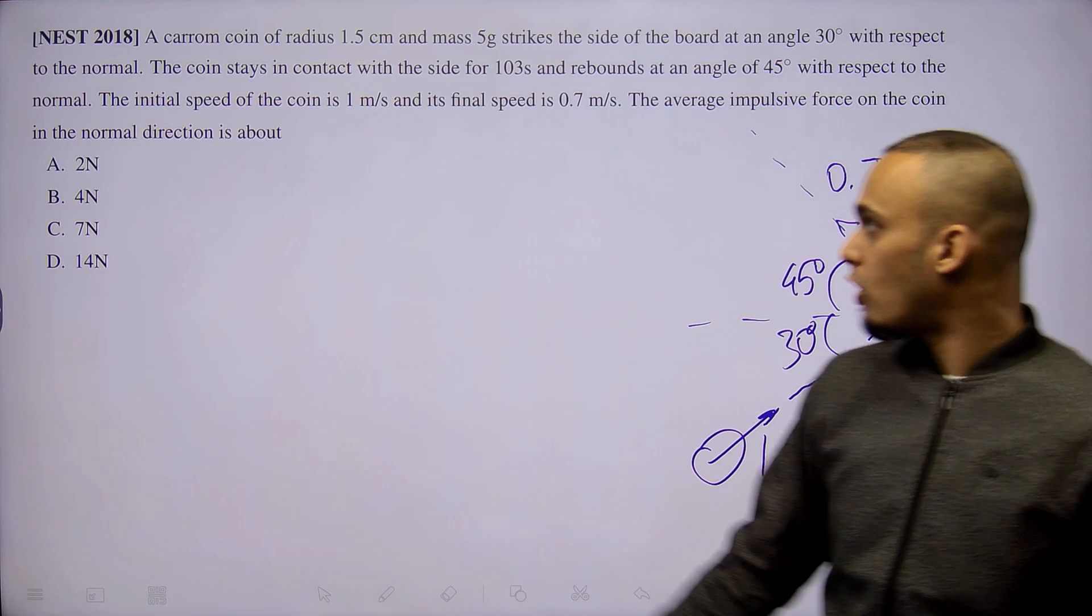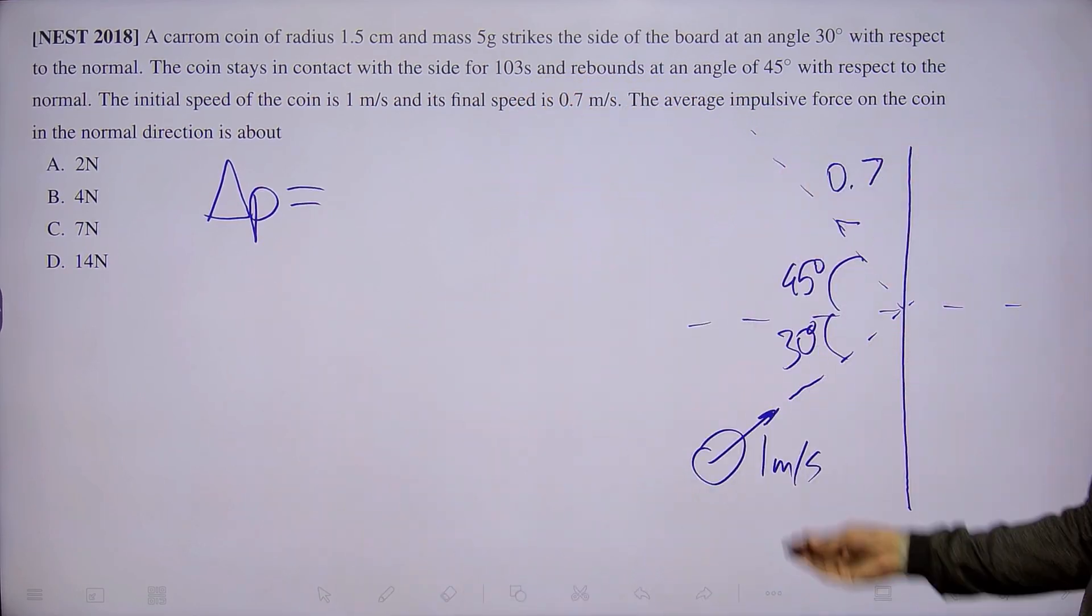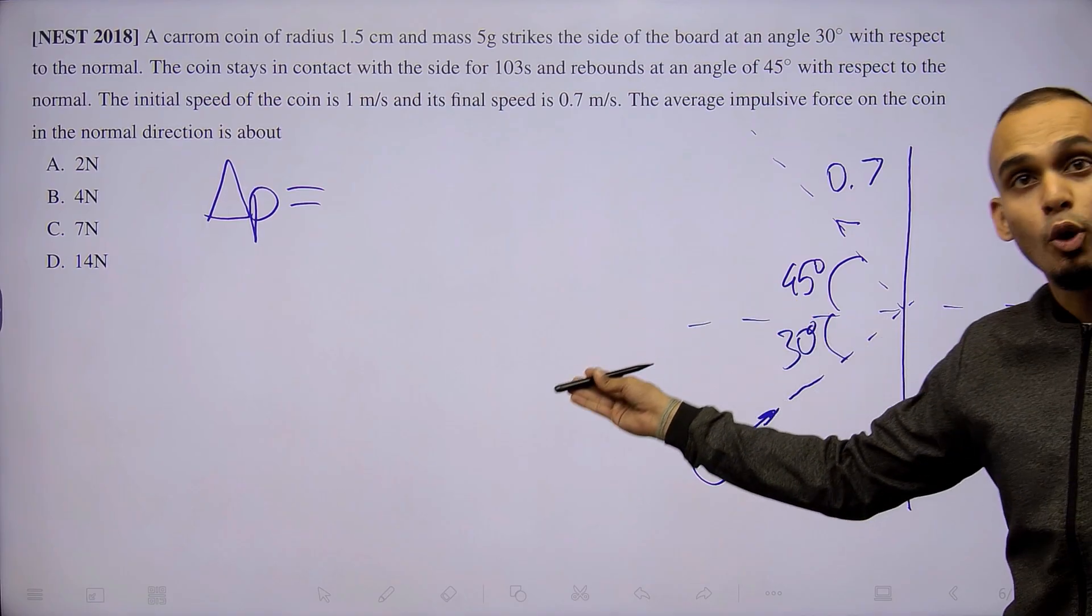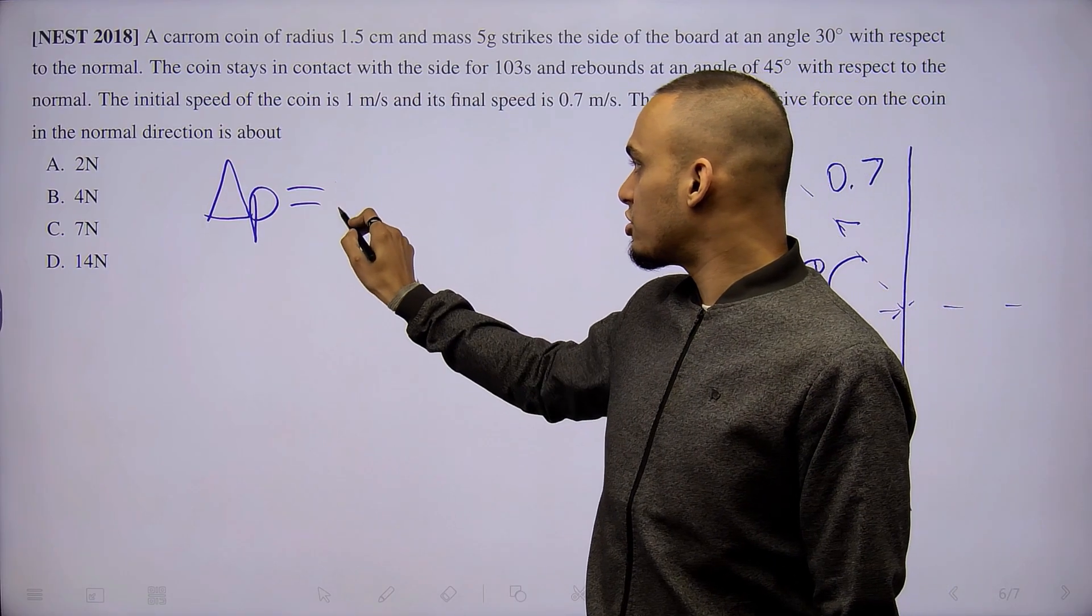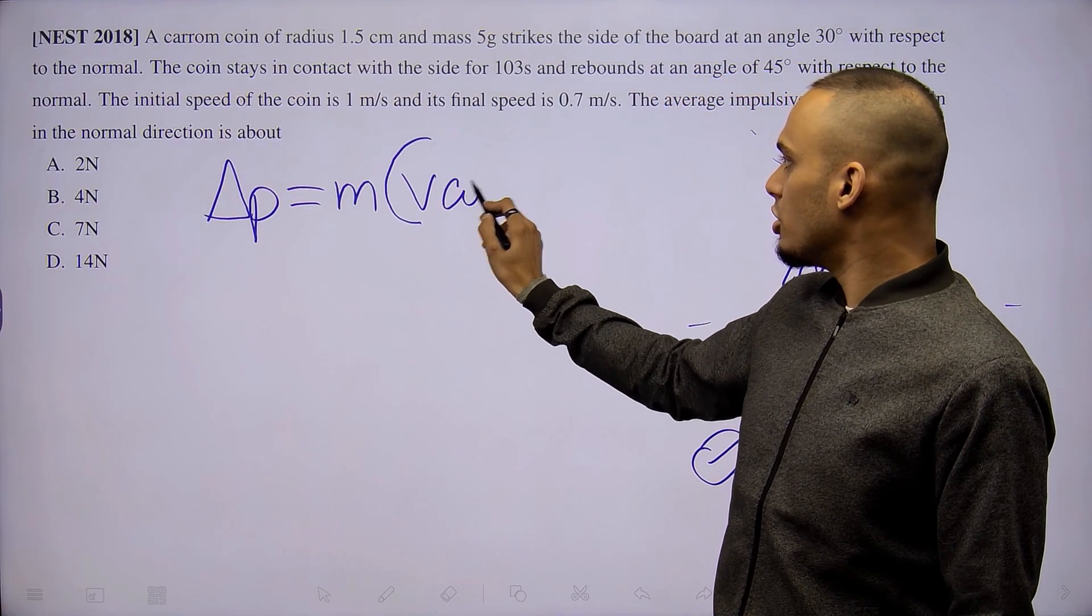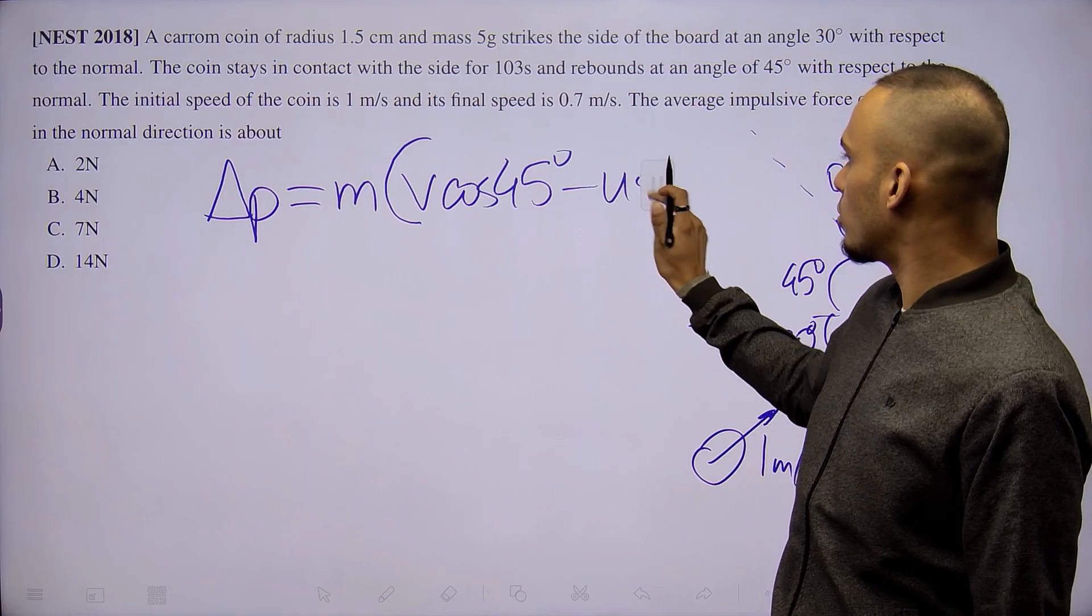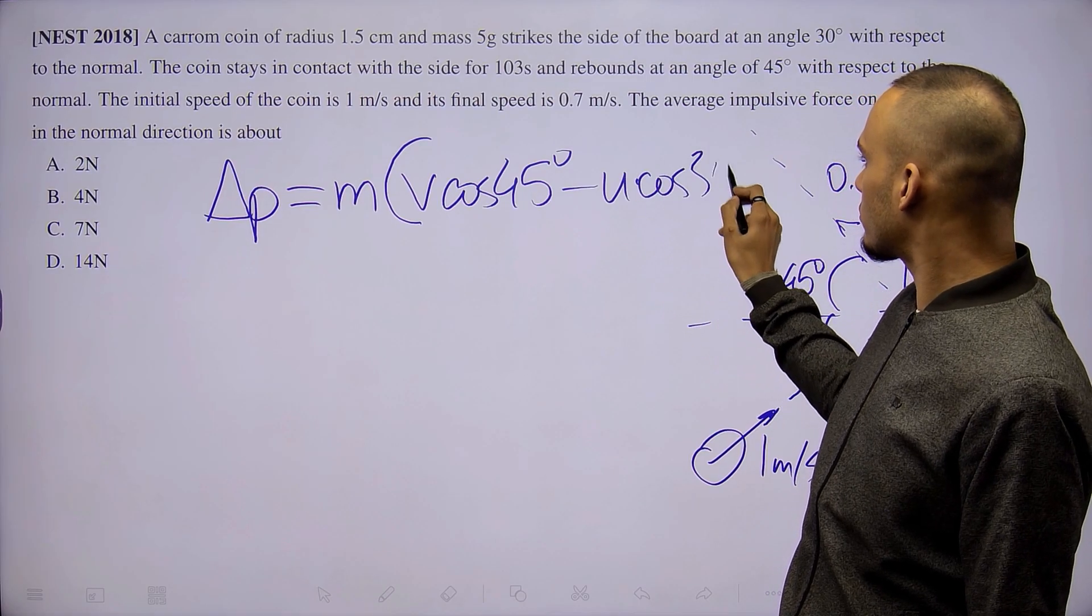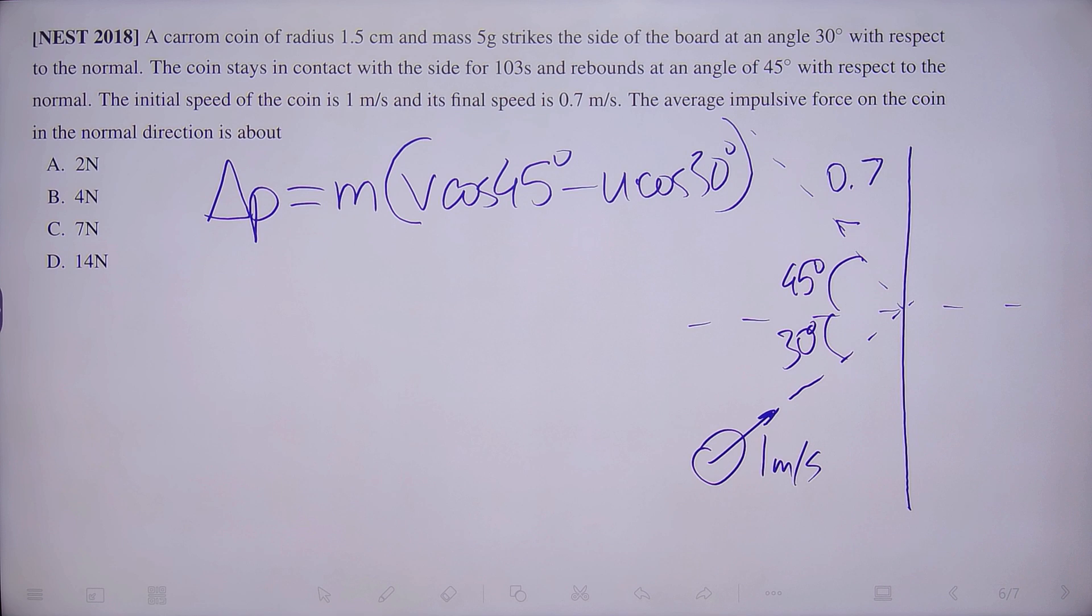So in order to find the change in momentum responsible for the impulsive force, we need to consider the normal component of velocity both initially as well as finally. Since mass of the coin remains constant, the change in momentum is simply final momentum times cos 45 degrees minus initial momentum times cos 30 degrees. We know cos 30 degrees is root 3 over 2 and cos 45 degrees is 1 over root 2.